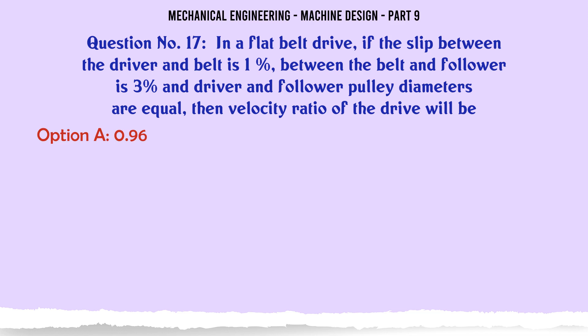In a flat belt drive, if the slip between the driver and belt is 1%, between the belt and follower is 3%, and driver and follower pulley diameters are equal, then velocity ratio of the drive will be: A. 0.96, B. 0.97, C. 0.98, D. 0.99. The correct answer is 0.96.